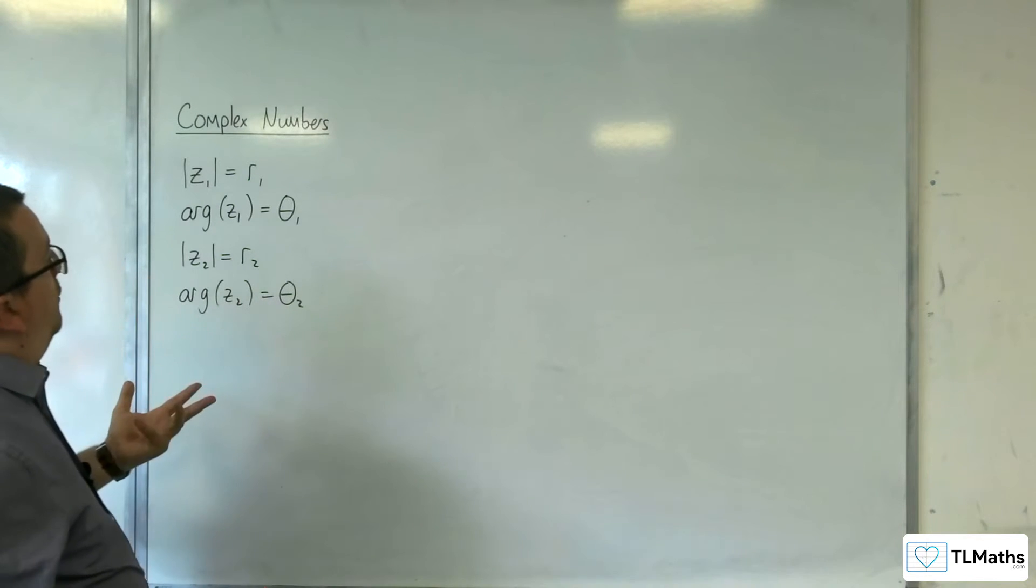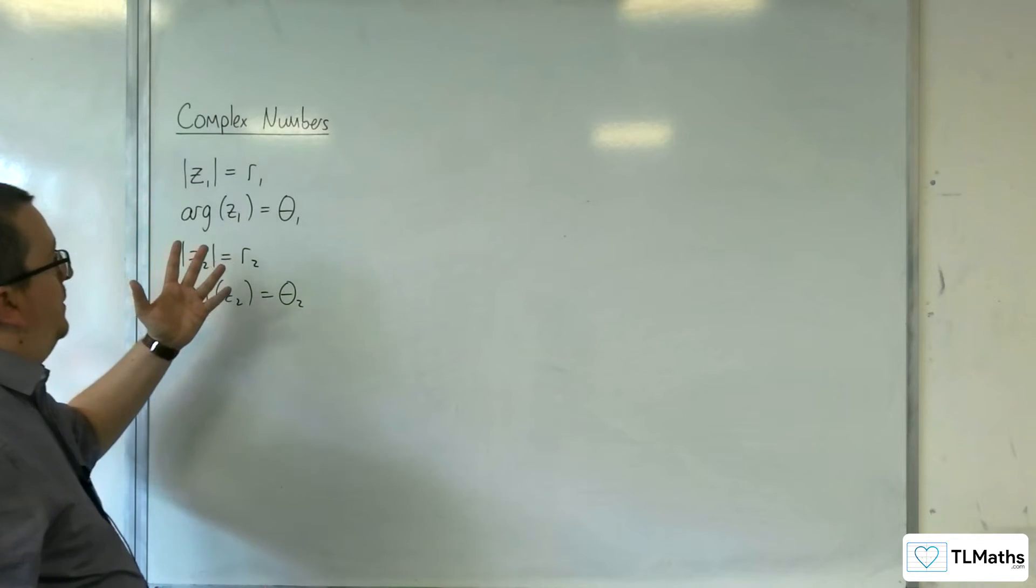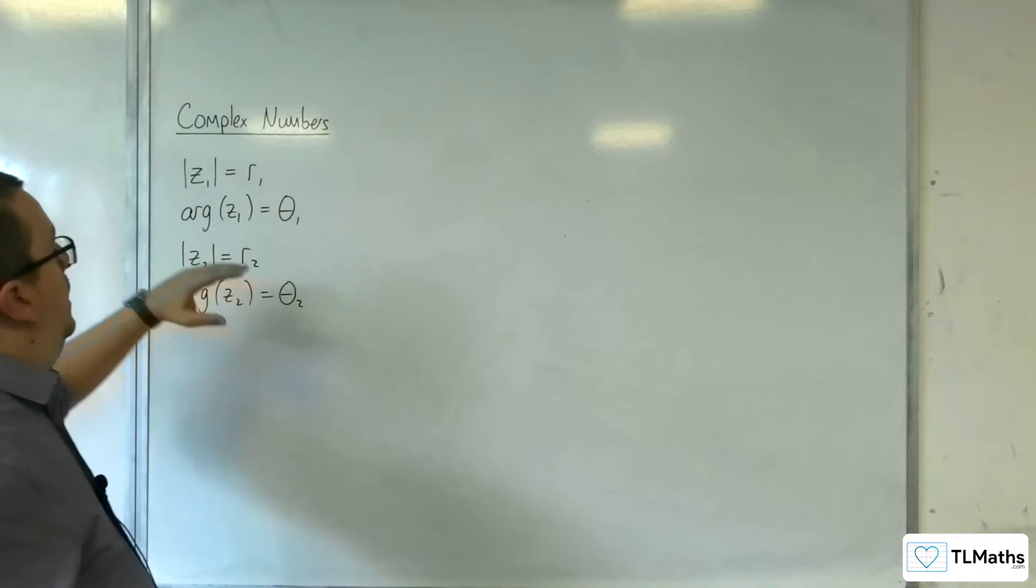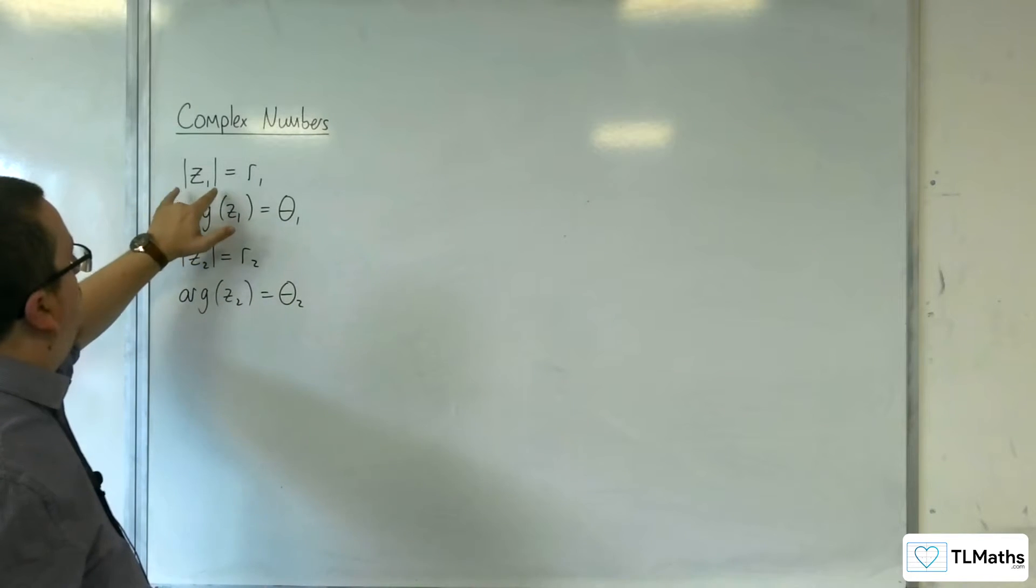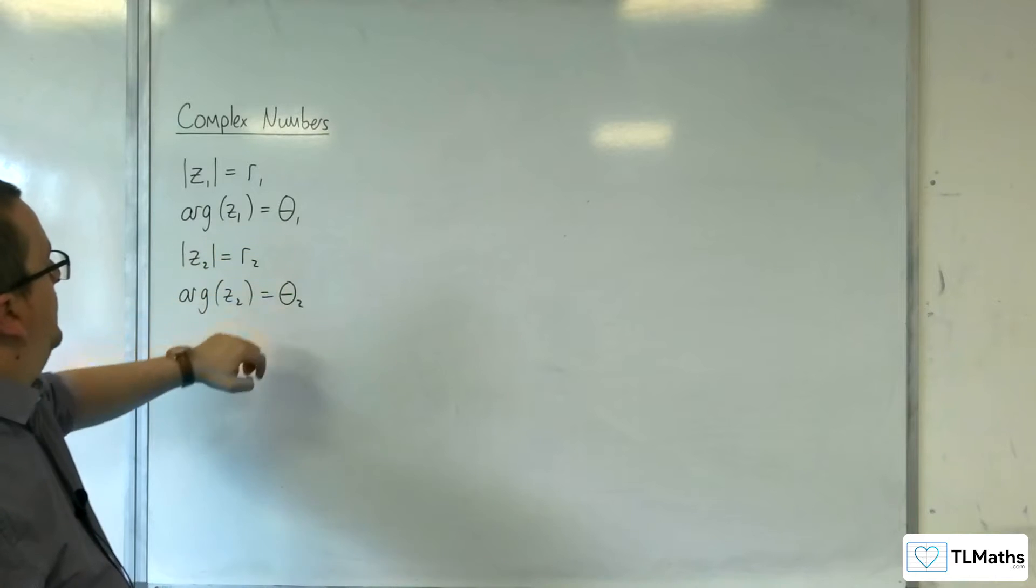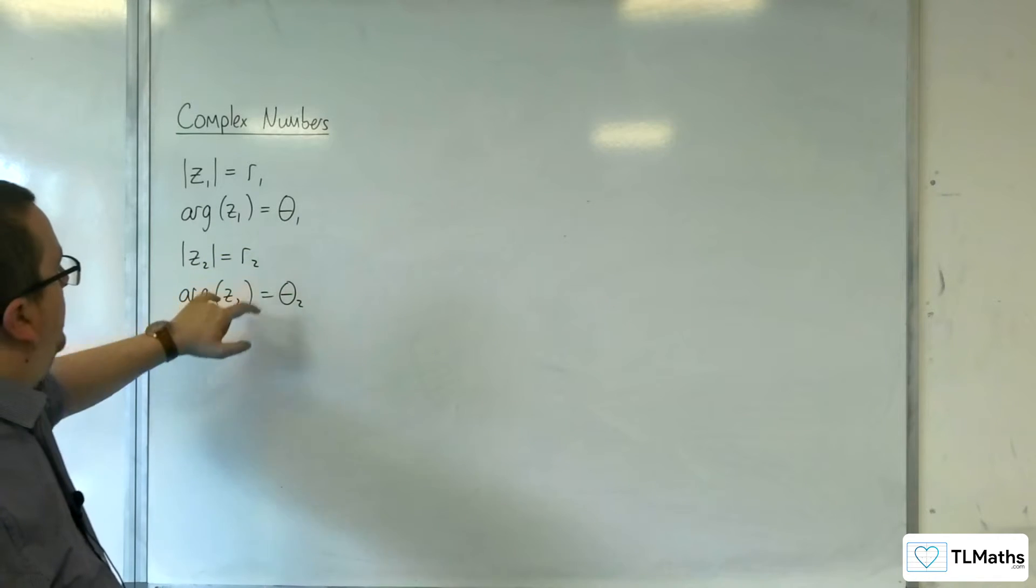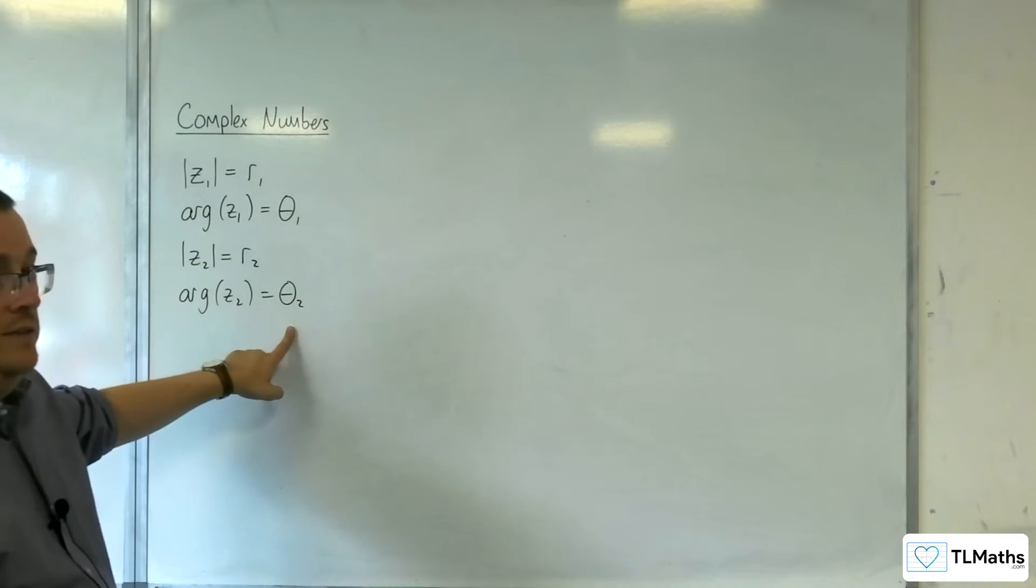We're going to start off by defining our two complex numbers, just as I did in the previous video, with the modulus of Z1 being R1, the argument of Z1 being theta1, the modulus of Z2 being R2, and the argument of Z2 being theta2.